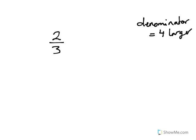Then for part b, it says the value of the fraction is two thirds. And the denominator is four larger than the numerator. So the denominator is four plus n. The denominator is whatever the numerator is plus four.